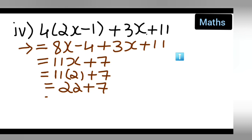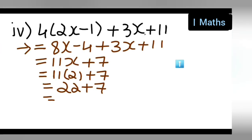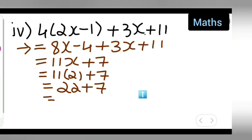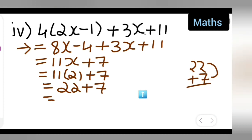22 plus 7 — 7 plus 2 is 9, bring down the 2, so your answer is 29.